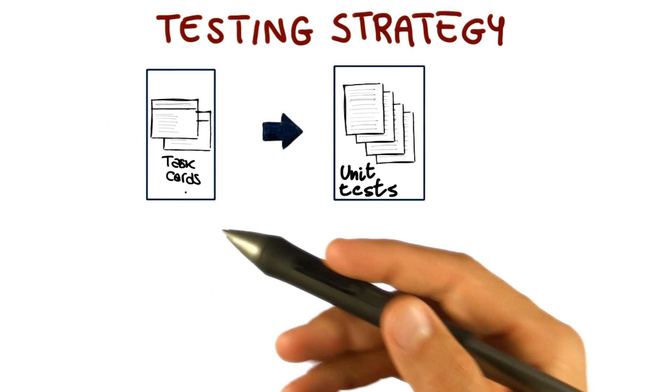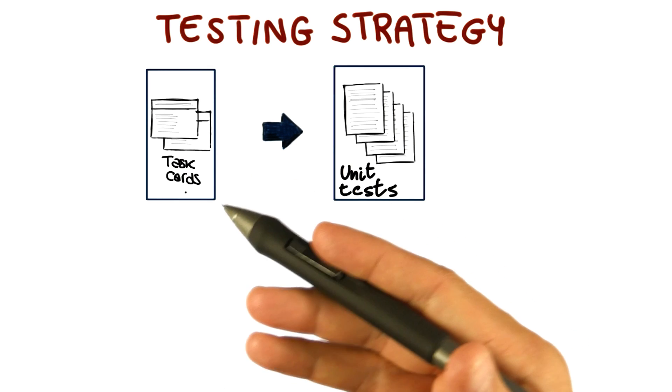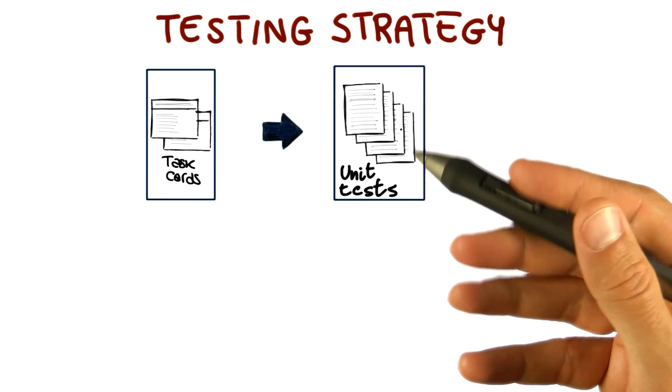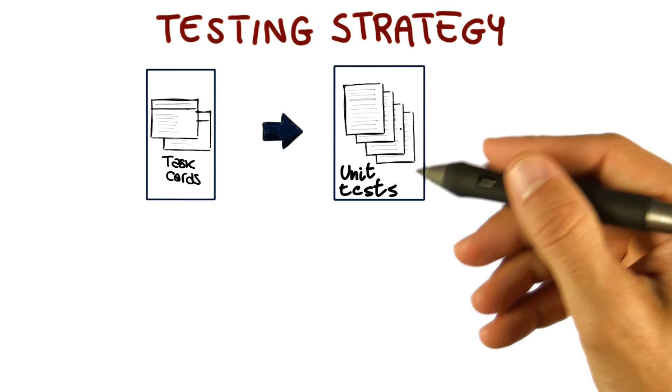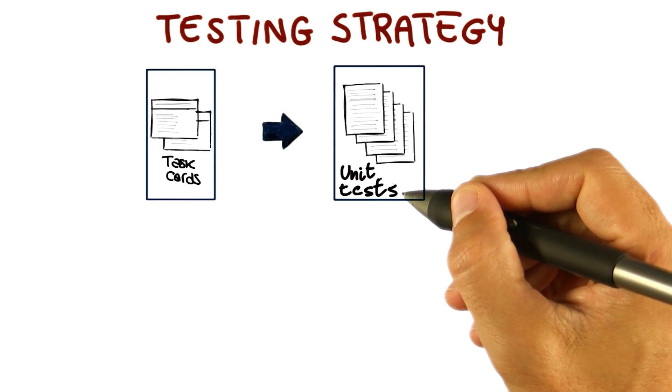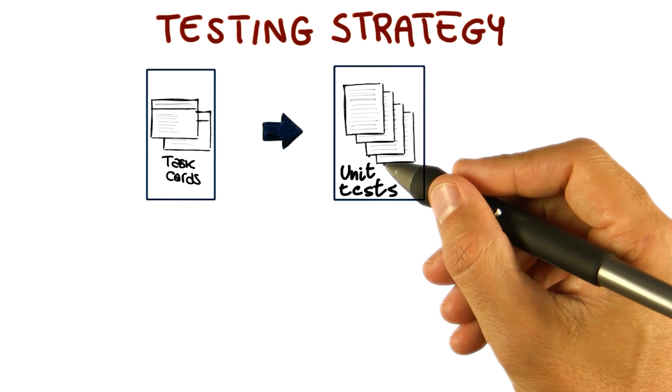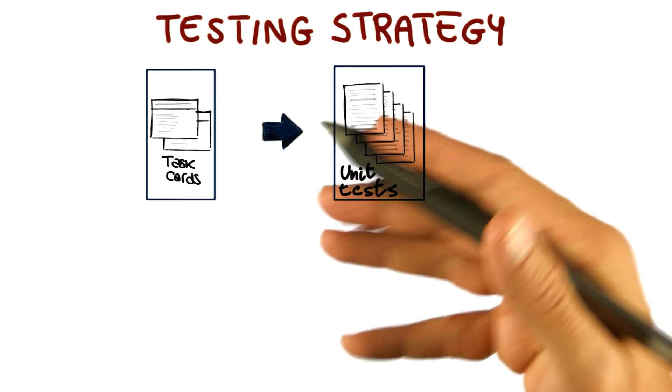And there are two kinds of tests. The first type of test is unit tests that are created by programmers, and they're created by looking at the task cards. The task cards describe what the implemented functionality should do, and therefore, allows the developers to write tests that can test this functionality, that can check that the code correctly implemented functionality.